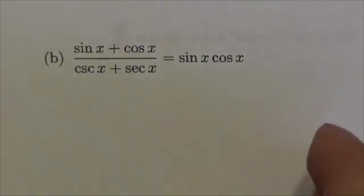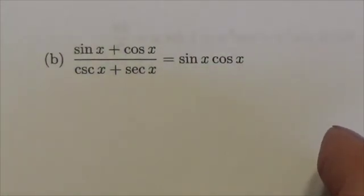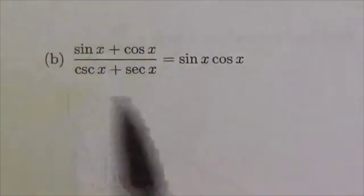Hi, everybody. This is the Math 30-1 Trig 2 review. This is question 2b, being asked to prove this identity.